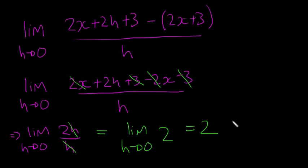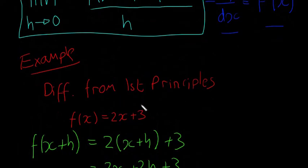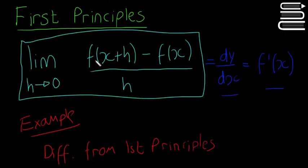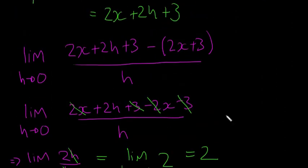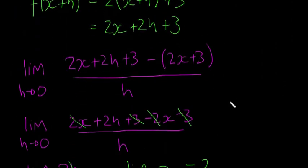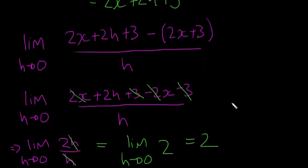So that might seem kind of pointless, but you just need to learn the method. The limit as h approaches 0 of f(x + h) minus f(x) divided by h — that's dy/dx or f dash of x, which will make more sense in the next video. That's all you need to know about differentiation from first principles. Thank you.